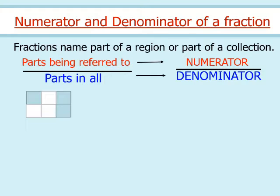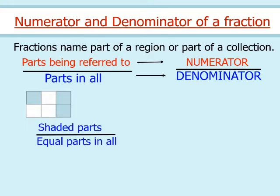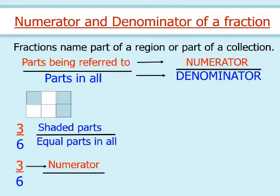For example, this figure is divided into 6 equal parts. Out of 6 equal parts, 3 parts are shaded. So the fraction for the shaded parts is shaded parts by equal parts in all, that is 3 by 6. In fraction 3 by 6, 3 is the numerator and 6 is the denominator.